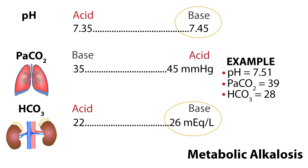In our next example, the pH is 7.51, so it is basic. The PaCO2 is 39, within normal range. The bicarb level is above 26 — it is high, also basic. This means we have metabolic alkalosis. Metabolic alkalosis can result from inadequate excretion of acids due to renal disease, loss of potassium from diuretic therapy, and other causes.